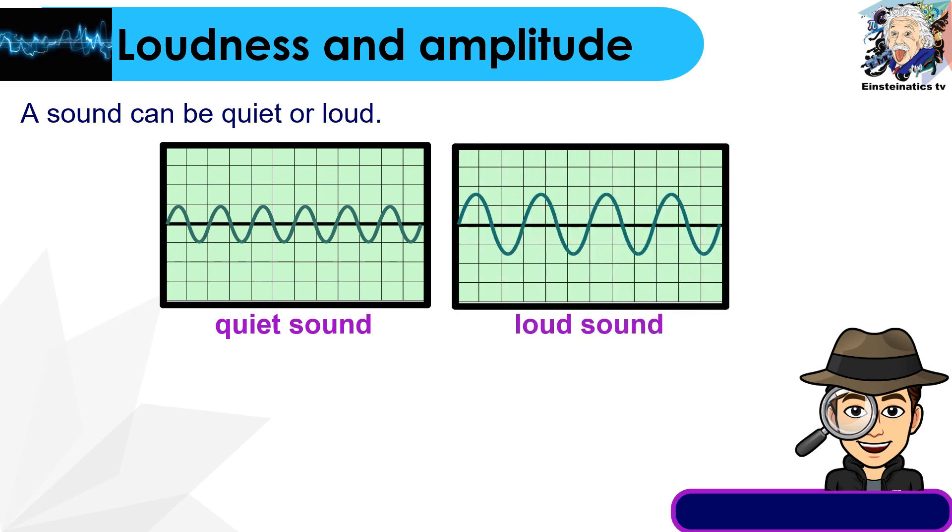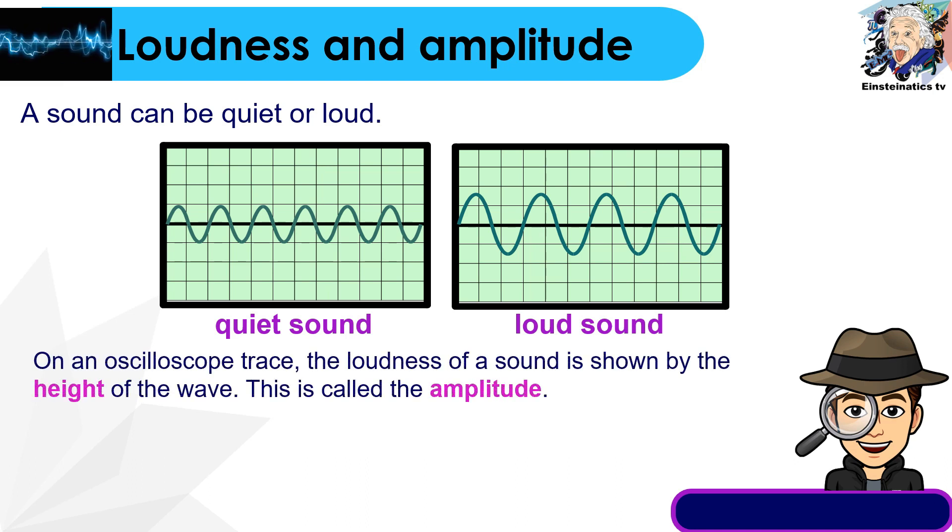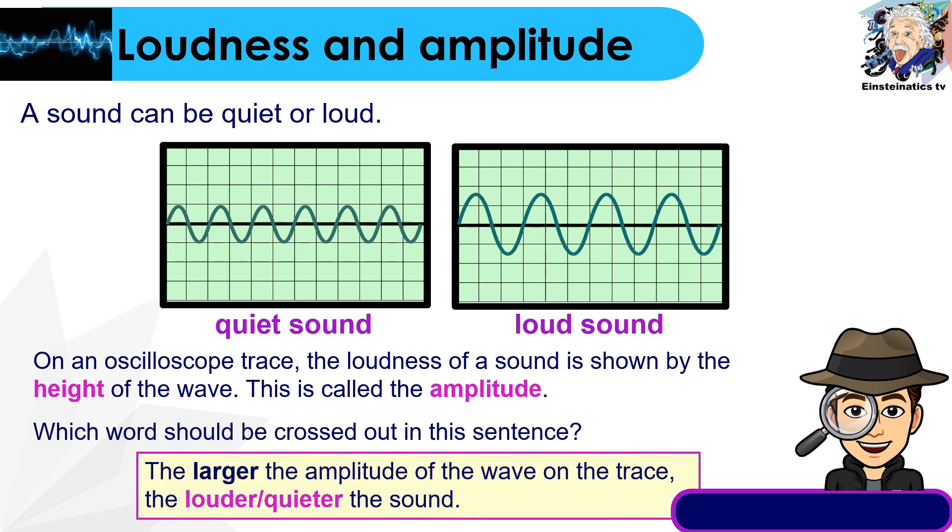A sound can be quiet or loud. This is the pattern produced on an oscilloscope of a quiet sound, and here's the loud sound. The loudness of a sound is shown by the height of the wave. This is what you call the amplitude. Which word should be crossed out? The larger the amplitude of the wave on the trace, the louder or quieter the sound? The correct answer is the louder the sound.